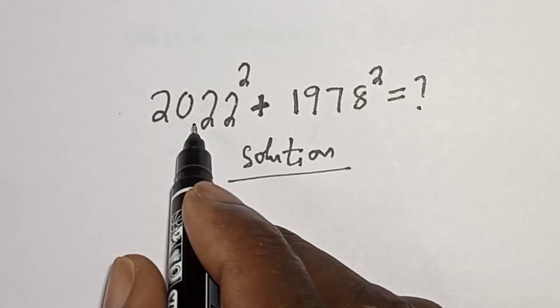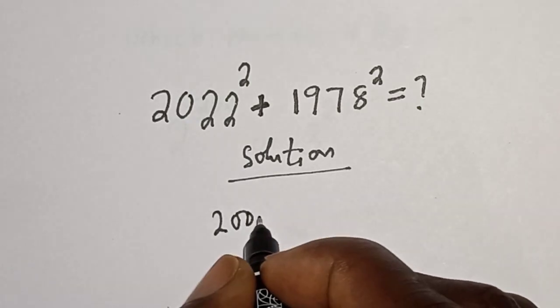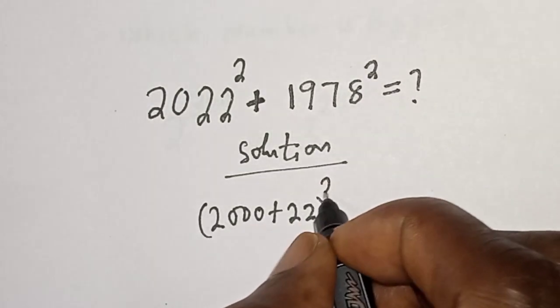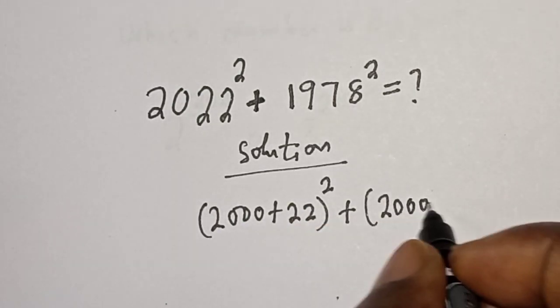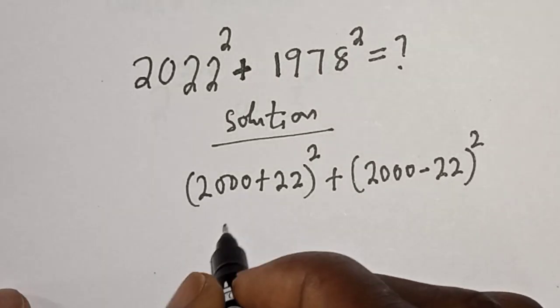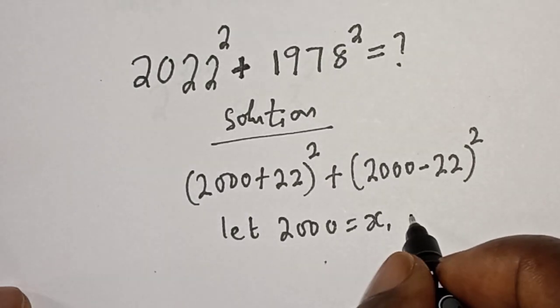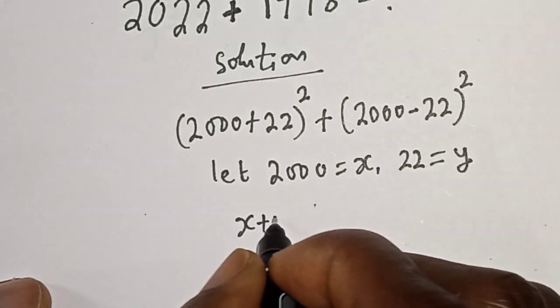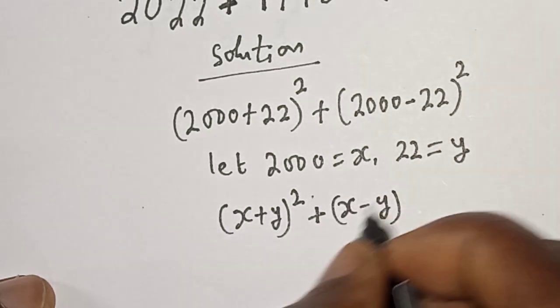Solution: Let's see, 2022 can be written as 2000 plus 22, then square, plus 1978 can be written as 2000 minus 22, then square. Now let 2000 is equal to x and 22 is equal to y. So this is x plus y square plus x minus y square.